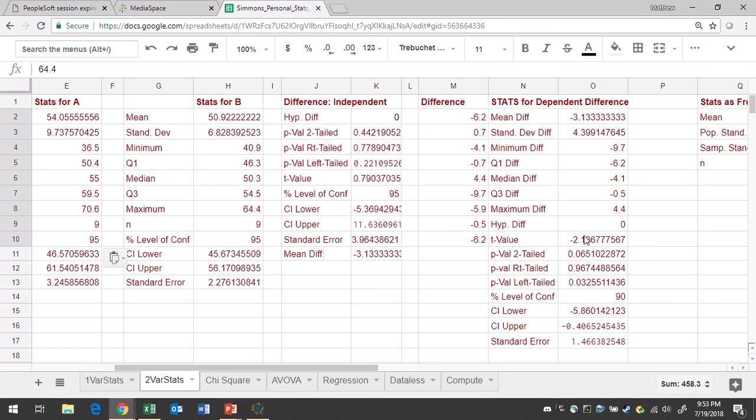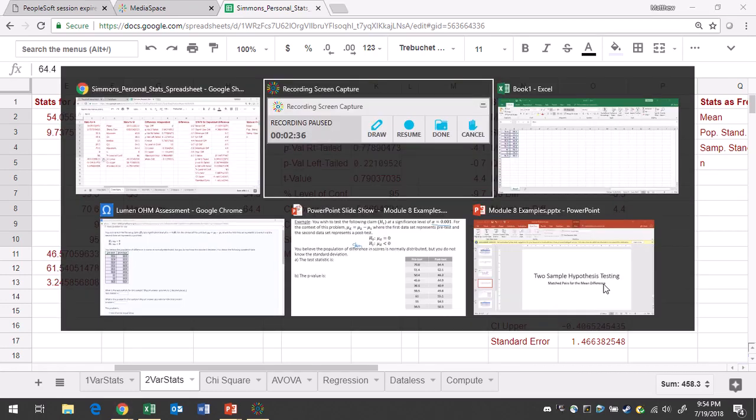So it looks like our test statistic will be negative 2.14, and we're dealing with a left-tailed test because we're dealing with less than. So the p-value is about 0.0326. Those are the two numbers that we need here. And although it does take a little while to get these calculations, it's probably better that Google Sheets is doing it than you.